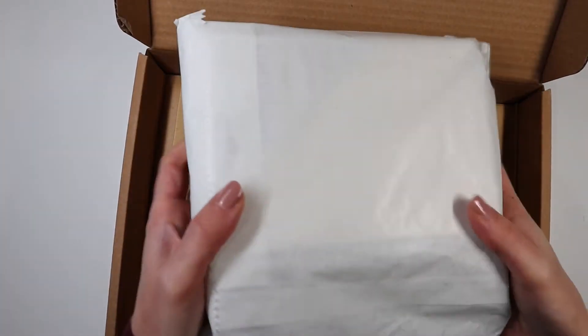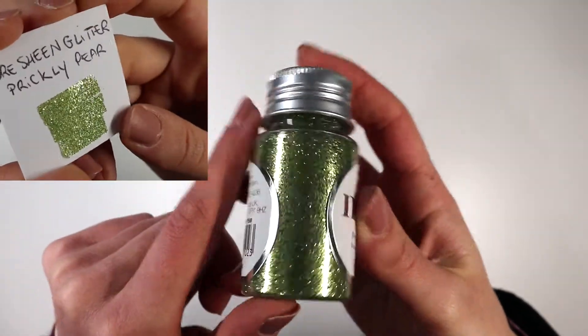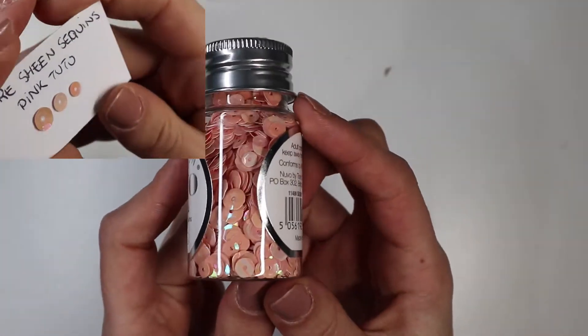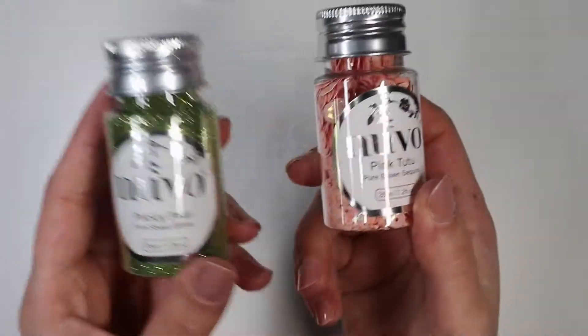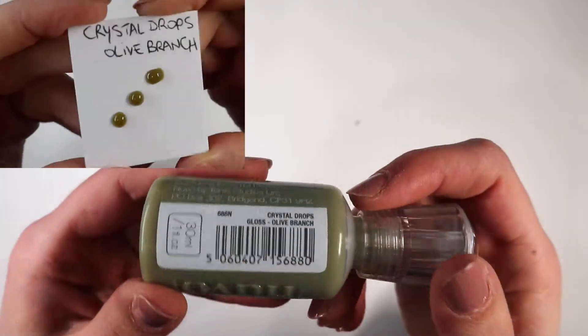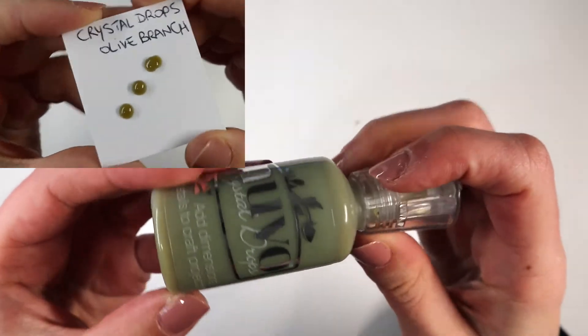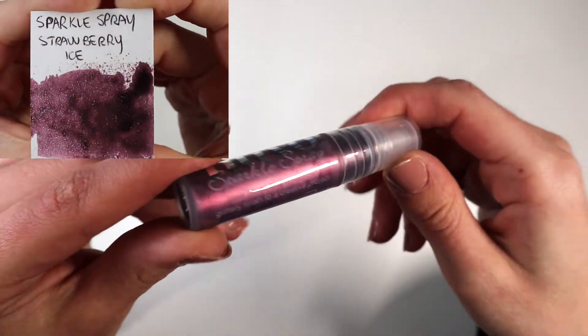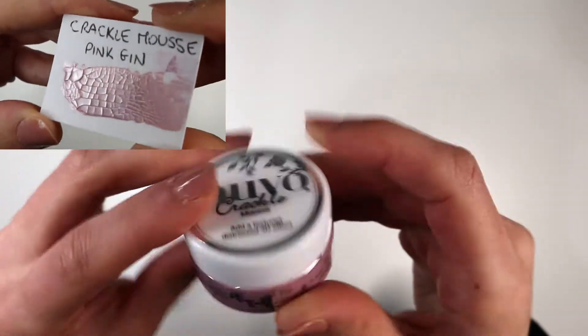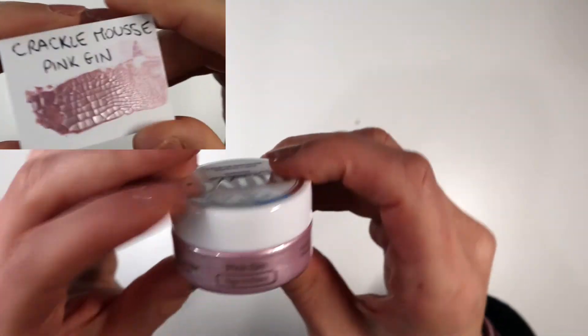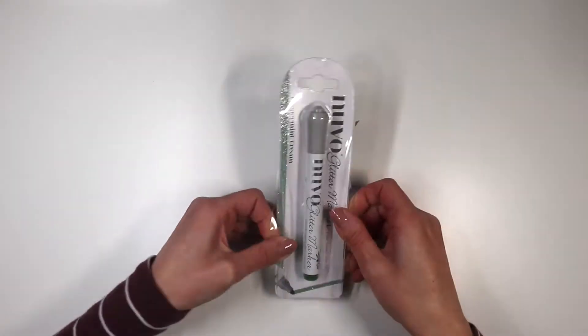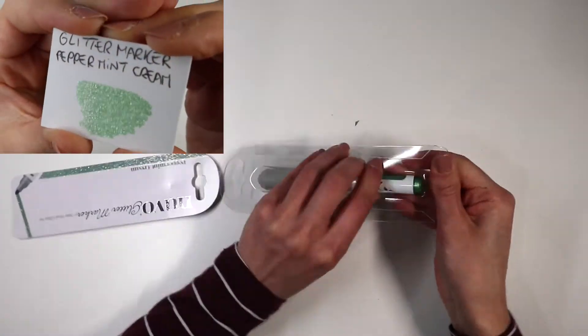Now let's move on to the Nuvo products. In kit 39 we randomly get a bottle of green glitter, as in my case, or a bottle of pink sequins which I already own. We also have an olive green crystal drop, a sample of dark pink Nuvo sparkle spray, a light pink pearlescent crackle mousse which has the particularity of crackling when dry, creating this fantastic texture. Finally, we find a peppermint glitter marker.